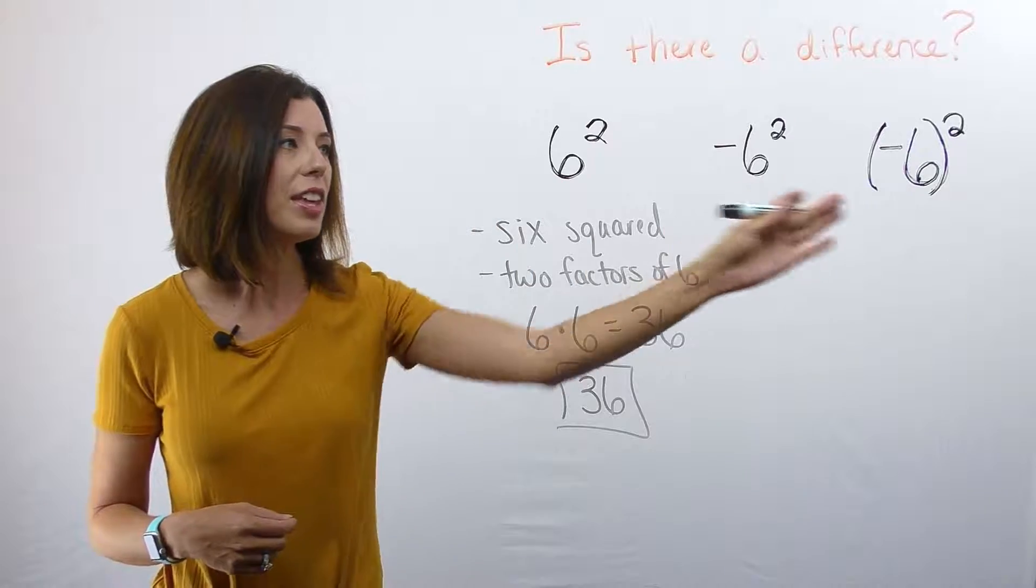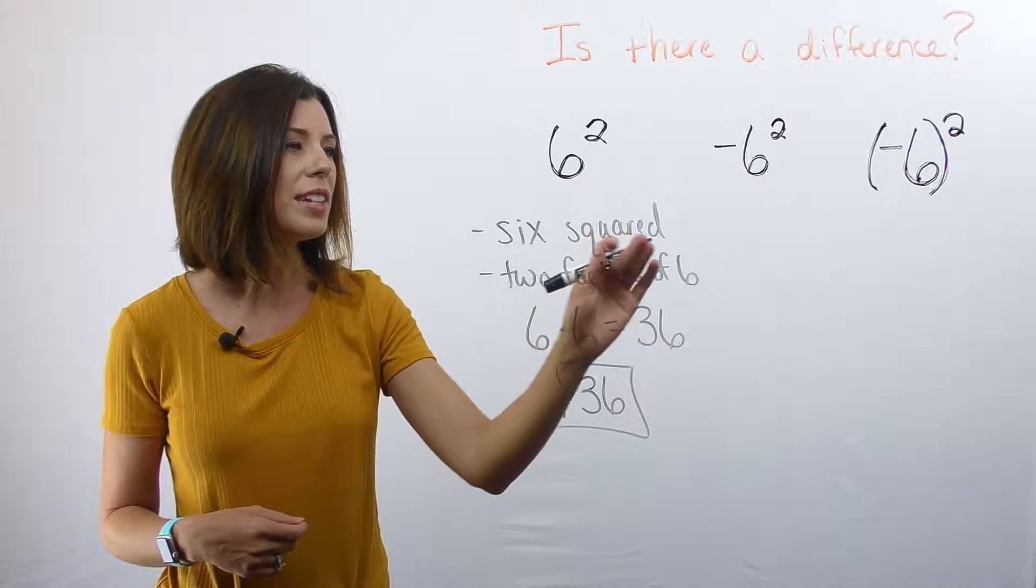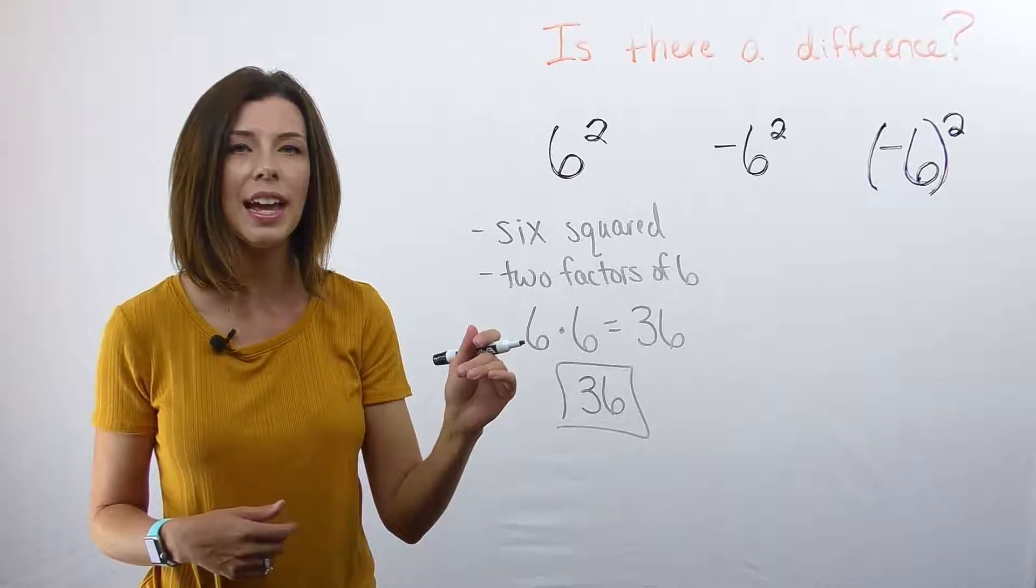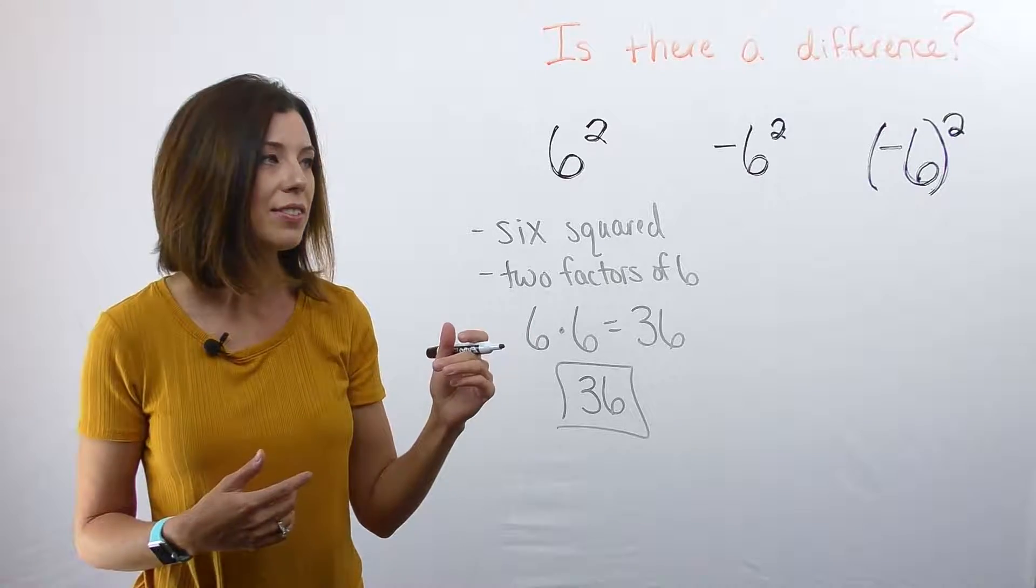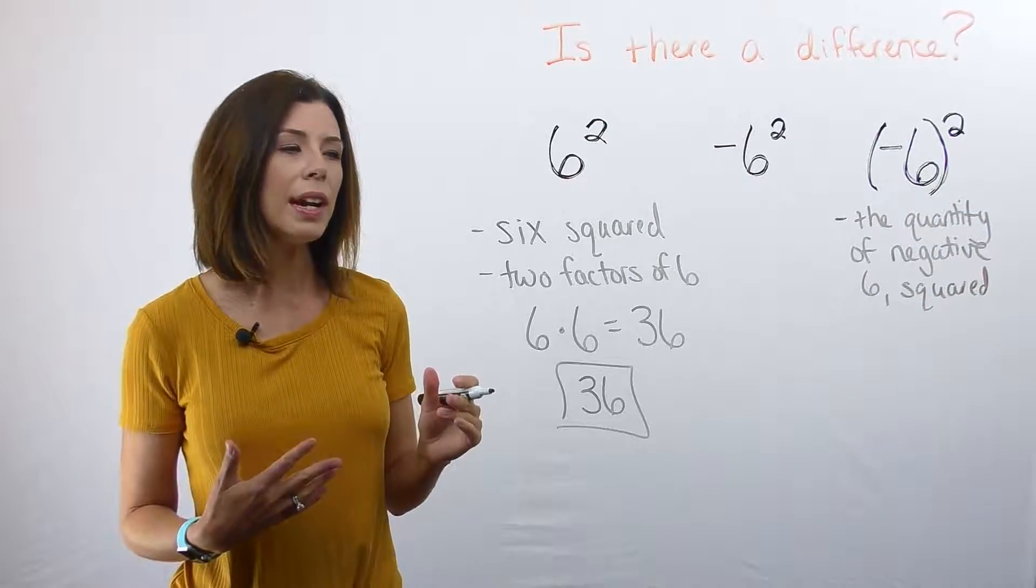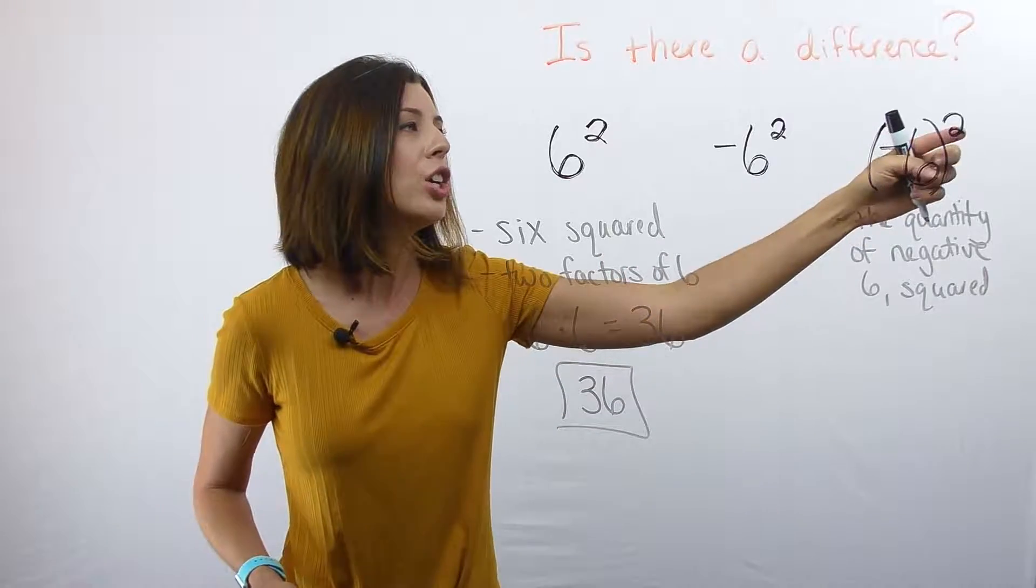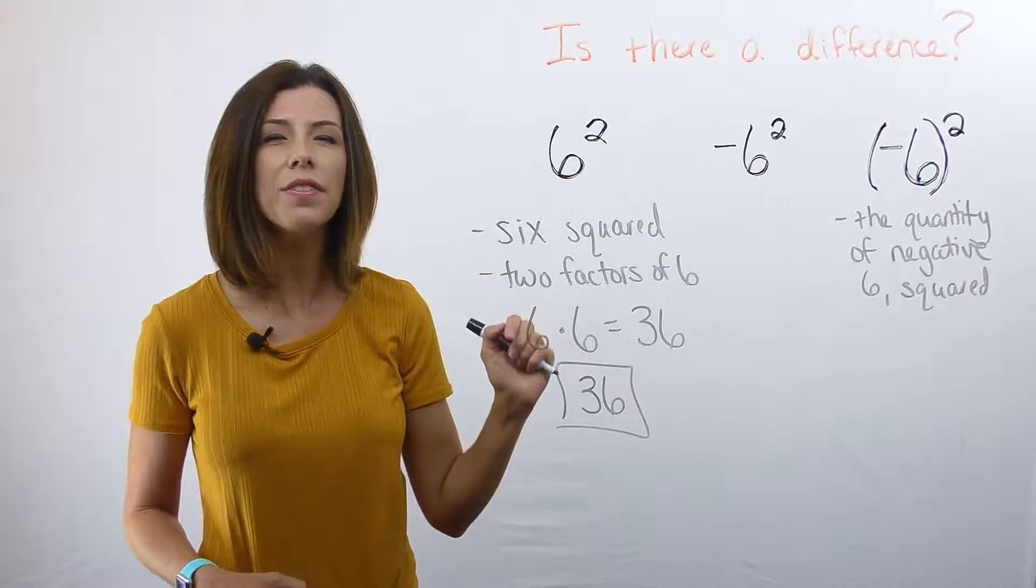Let's go back to thinking about this in terms of words and factors. So instead of saying six squared, I'm going to say the quantity of negative six squared. And when I think about the factors language, I'm really saying I need two factors of negative six.